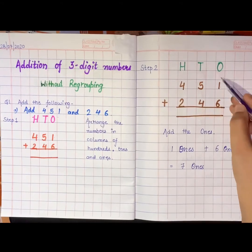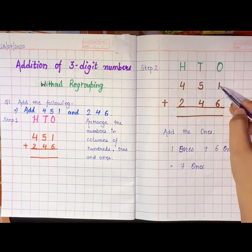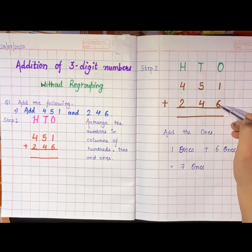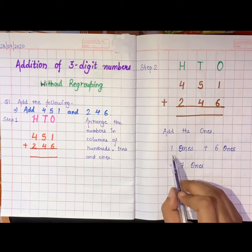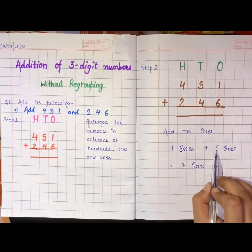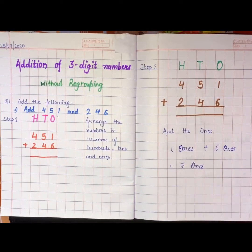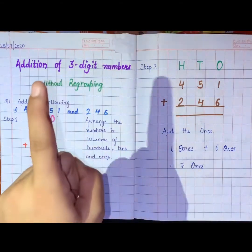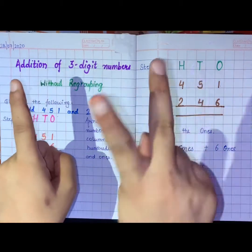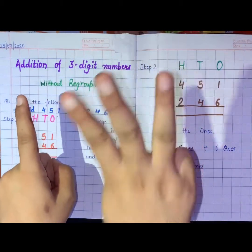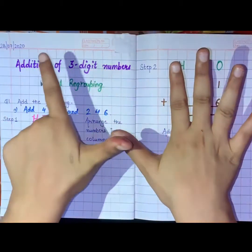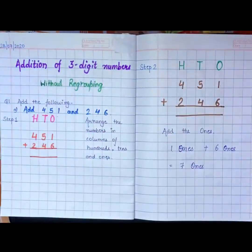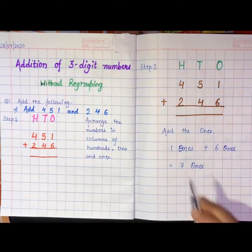Under the ones column we have 1 and 6. So now we have to add 1 and 6. Counting: 1, 2, 3, 4, 5, 6 — total is 7. So after adding the ones place, I got 7.